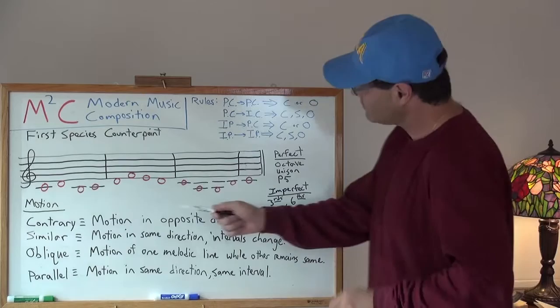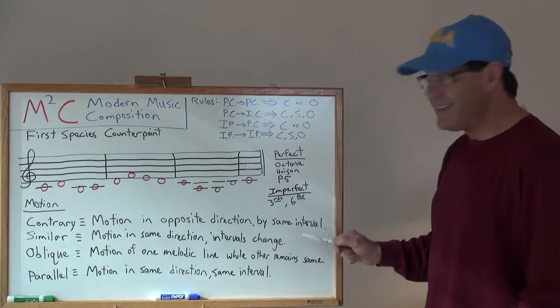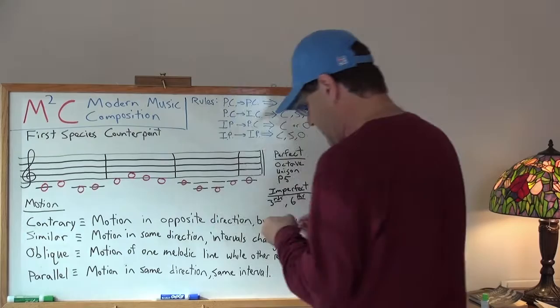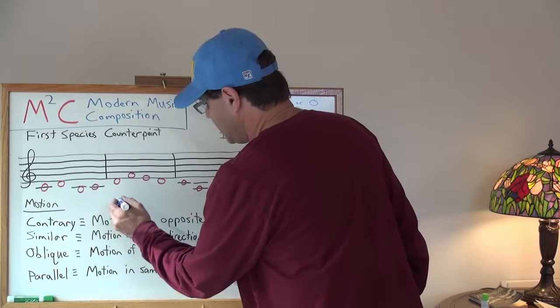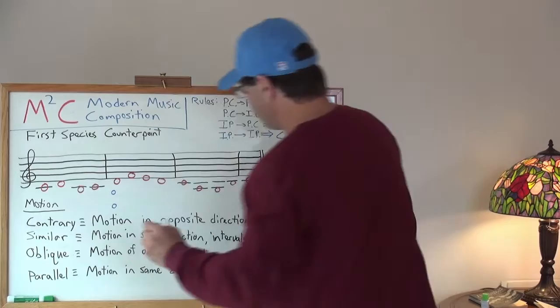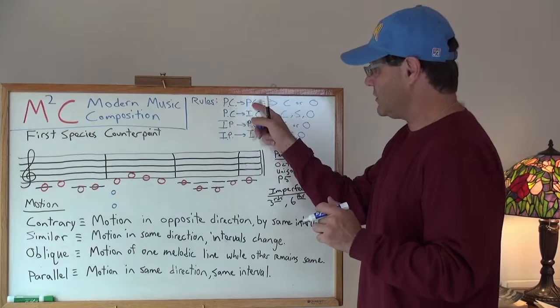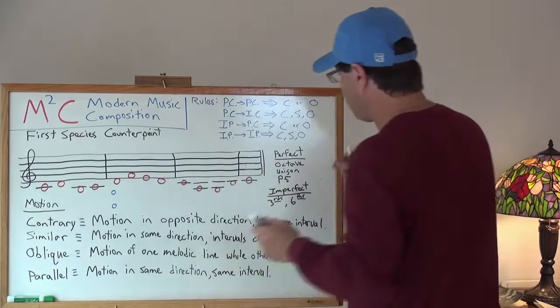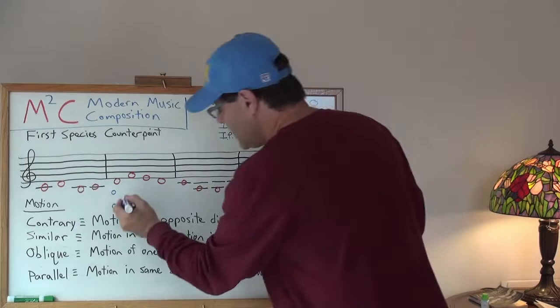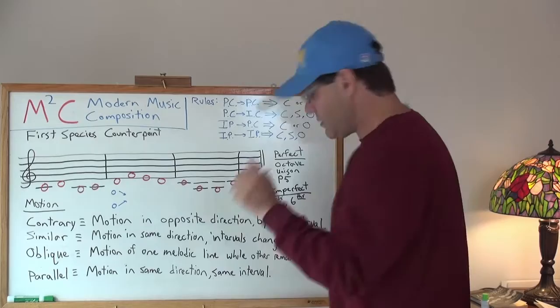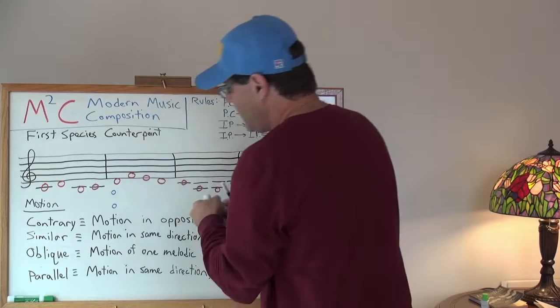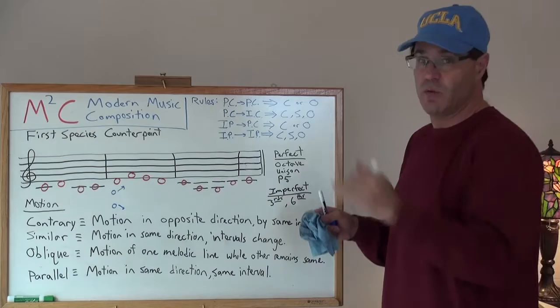Okay, contrary motion. Contrary motion is motion in opposite direction by the same interval. What does that mean? Well, that means if I'm just drawing, let me draw it in blue. If I'm here at a D and I'm up here at another D, let's say I've written out an octave. Well, that's a perfect consonants. I have a choice in motion whether or not I can go to another perfect consonants. And if I do that, if I move this way in another perfect consonants, I have to move by contrary or oblique motion. Contrary motion means if this guy goes up, this guy goes down. Or if this guy goes up, this guy goes down. Either one of those is contrary. One is moving in the opposite direction than the other.